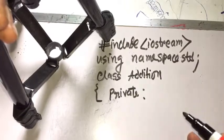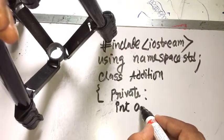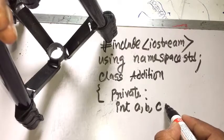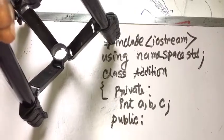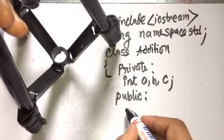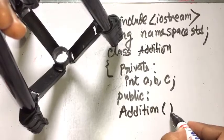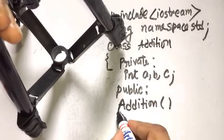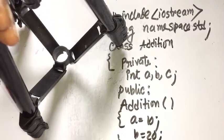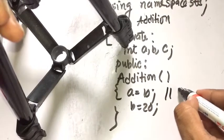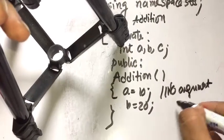In the private section we declare variables: int a, b, and c. In the public section there is a member function whose name is same as the class name — 'addition' — this is the no-argument (default) constructor, where a is initialized to 10 and b to 20.